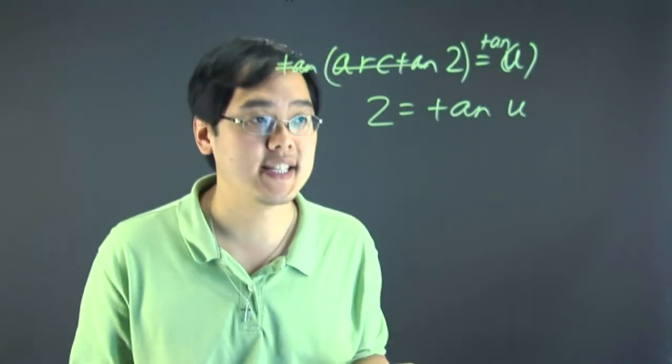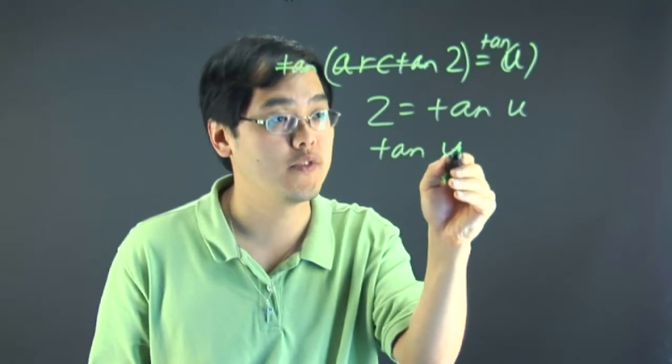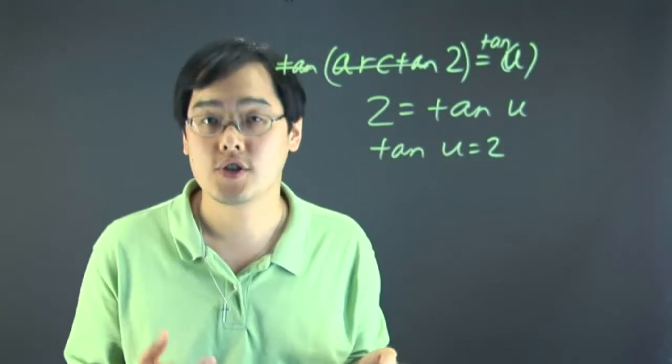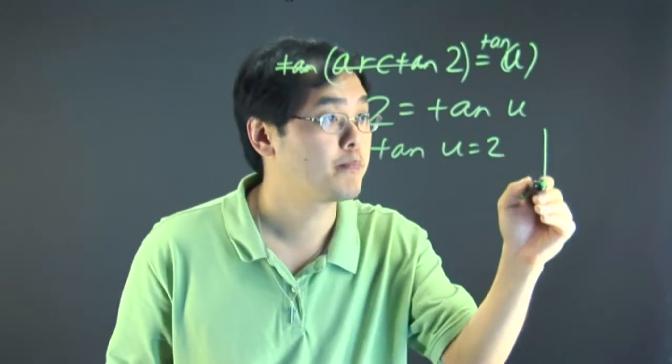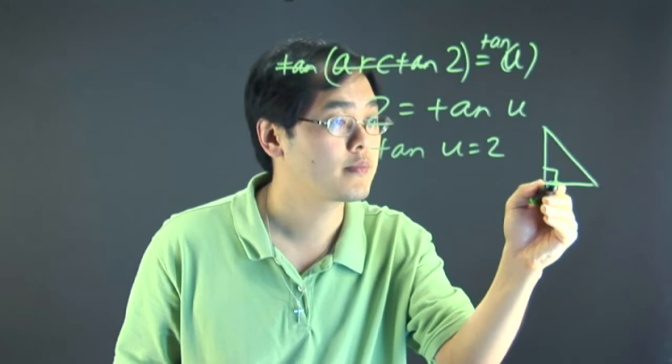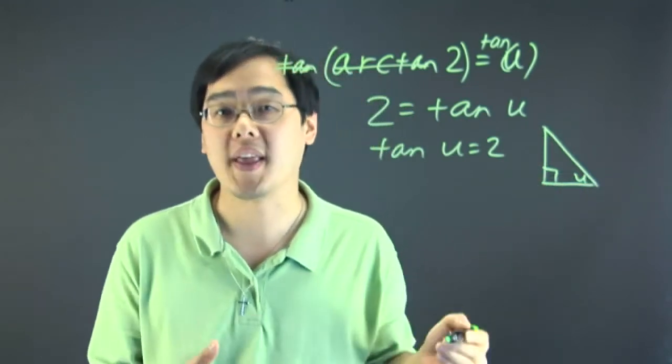Now u can be thought of as an angle. Let me switch these around, so if tan u = 2, to show you what I'm looking for. I talked about right triangles before, so we're going to draw a right triangle like so, and I'll put the angle u right there.